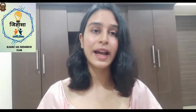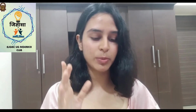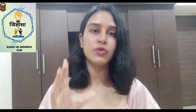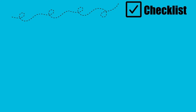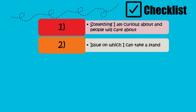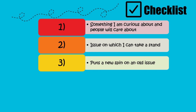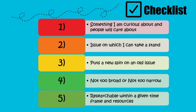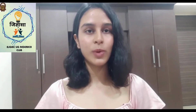Finally, here is a checklist to keep in mind for a good research question. Ask yourself five questions: Is my research question something I'm curious about and that people might care about? Does it present an issue on which I can take a stand? Does it put a new spin on an old issue or try to solve a problem? Is it too broad or too narrow — or is it just right? And is it researchable within a given time frame and with resources available in my area?